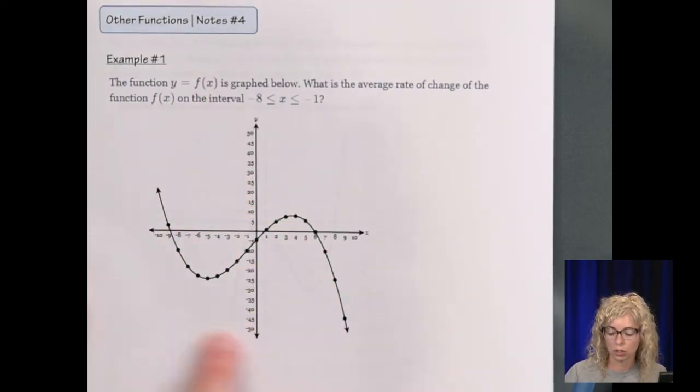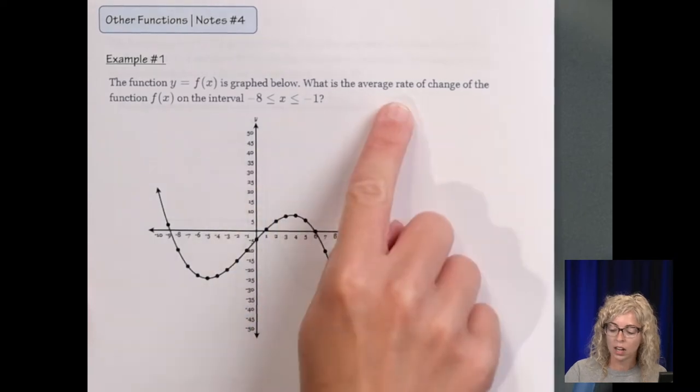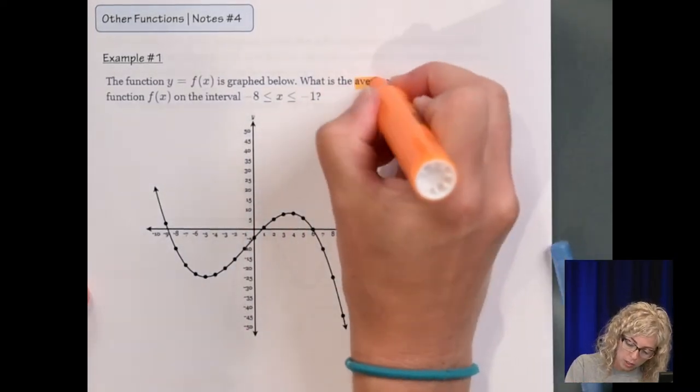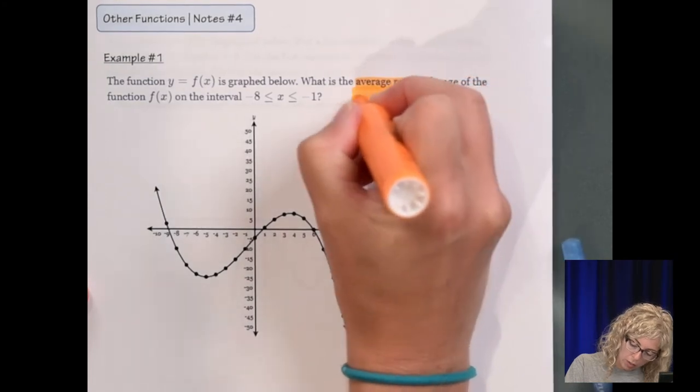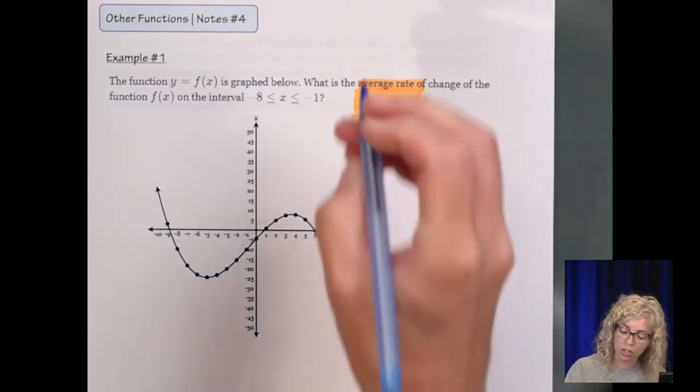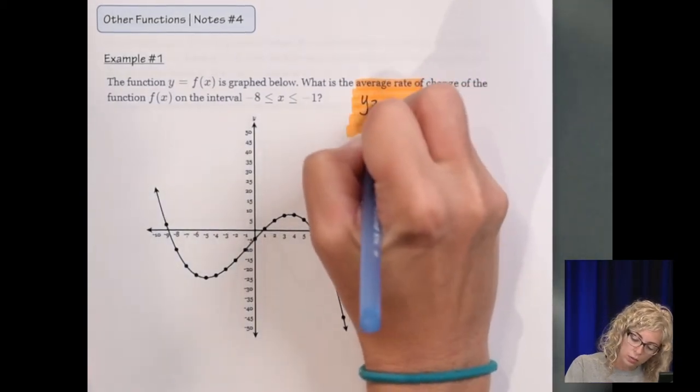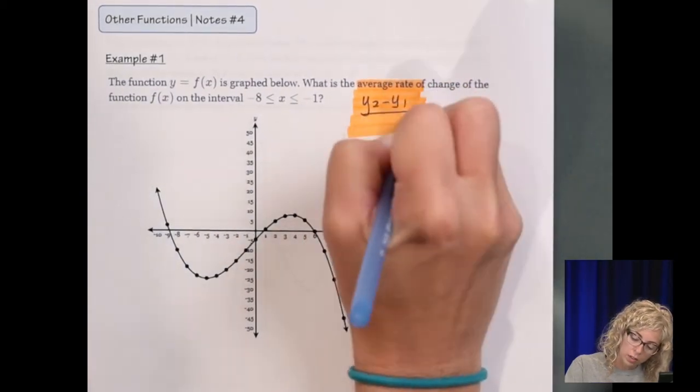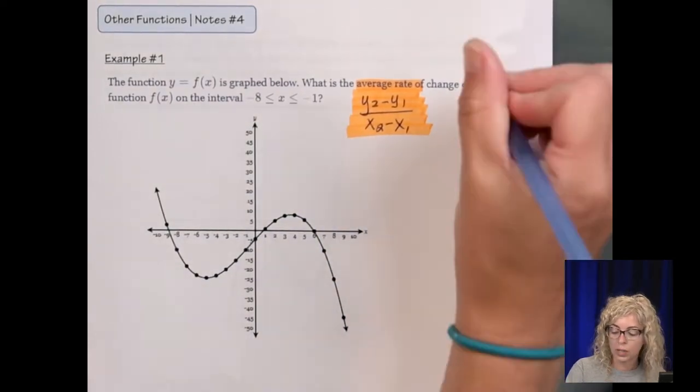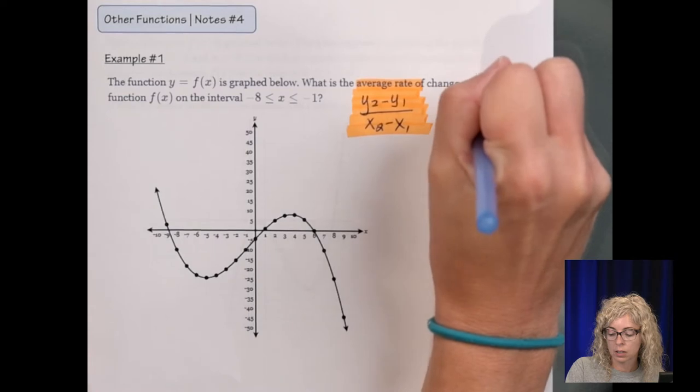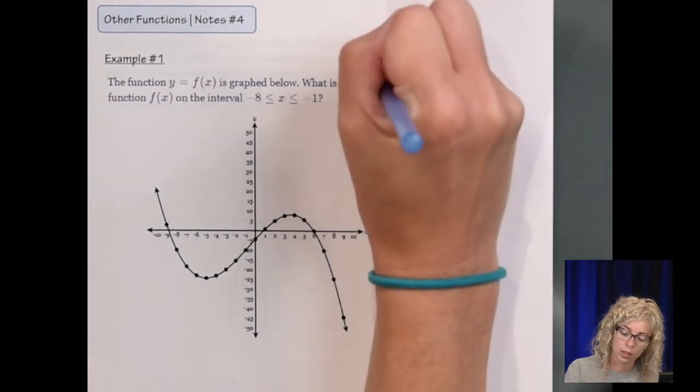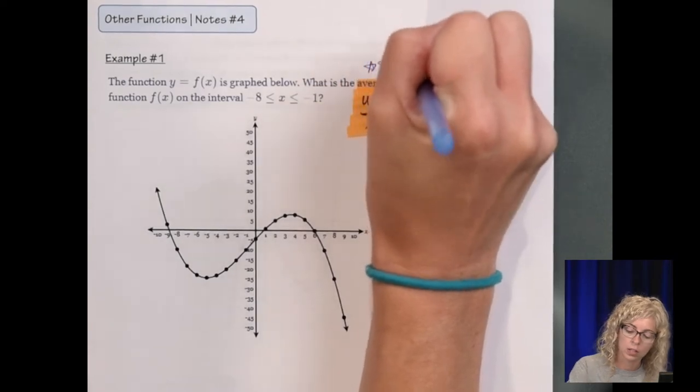So here is a graph of some function. What is the average rate of change? Now average rate of change is slope. So we have to be thinking about that formula. So let's write down the formula which is y2 minus y1 over x2 minus x1. So we need two points. This is also called slope.